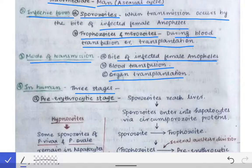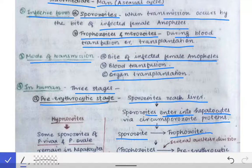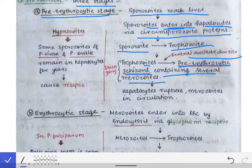When sporozoites enter the human body, they pass through three stages. The first stage is the pre-erythrocytic stage. After the mosquito bites, sporozoites are injected into the bloodstream. They travel to the liver and enter inside the hepatocytes with the help of circumsporozoite proteins. The sporozoites then get converted into trophozoites, and those trophozoites after several nuclear divisions get converted into the pre-erythrocytic schizont containing several merozoites. This process is called schizogony.